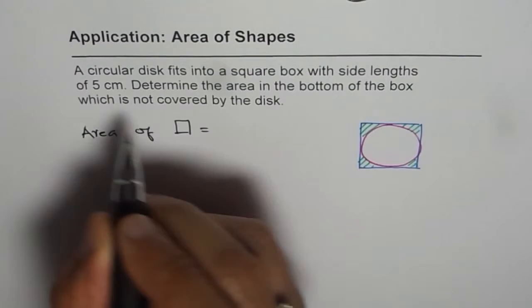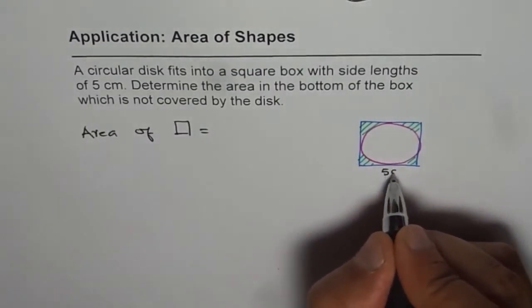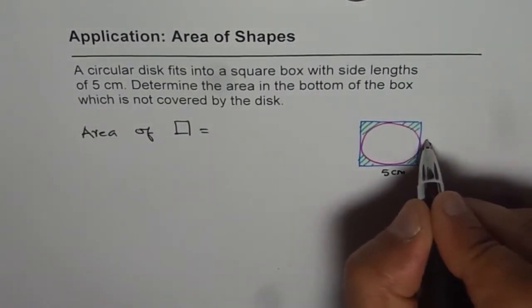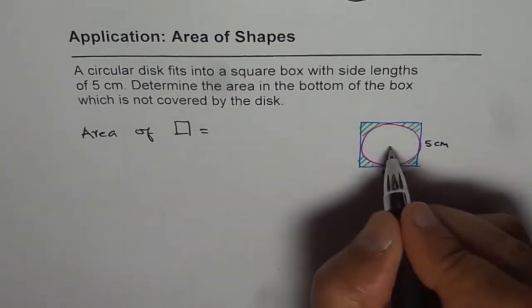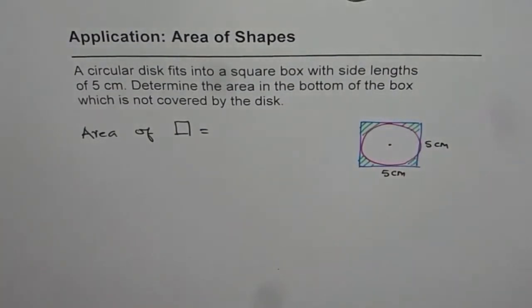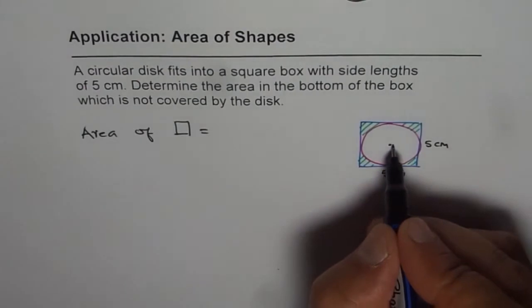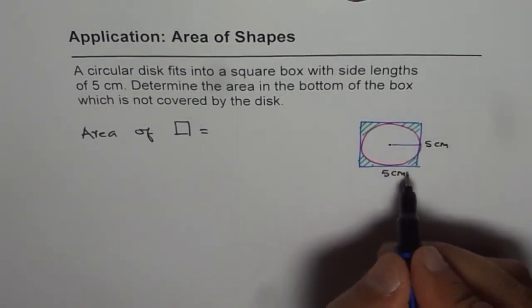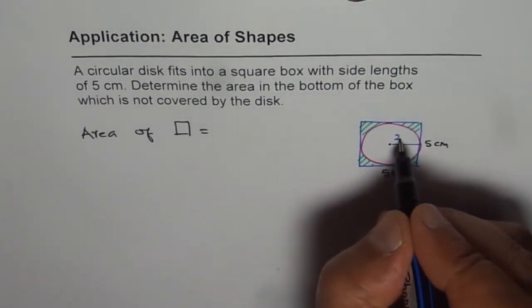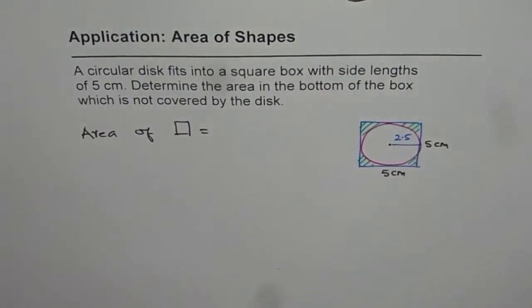Let me draw a square here. 5 centimeters is the side length, so it is 5 centimeters on both sides. What is going to be the radius? That's tricky. The radius of the circle should be half of 5, so half of 5 is 2.5 centimeters.